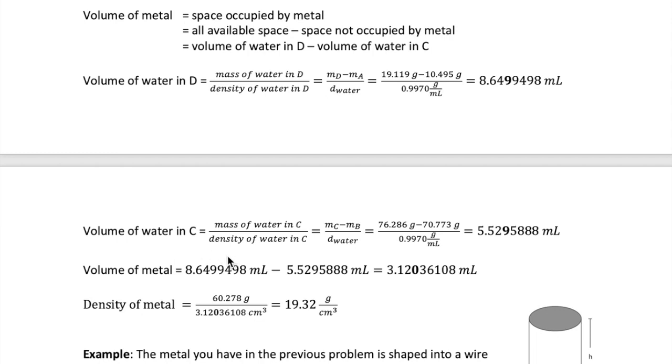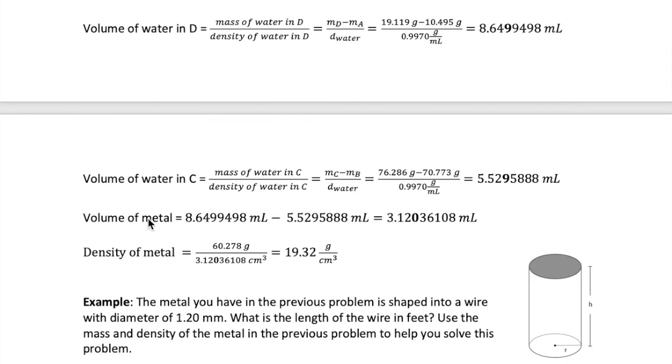Now, let's continue to calculating the volume of water in C. Similarly, that means we need to divide the mass of water in C by its density. Mass of water in C is equal to MC minus MB. Dividing by density gives us this volume, which again has the fourth digit bolded to indicate where the answer should end for significant figure purposes. To get the volume of the metal, we just subtract the two volumes we got to give us this number. Lastly, we divide the mass of the metal by its volume, now in units of cubic centimeter because we're dealing with a solid, and we get 19.32 grams per cubic centimeter.